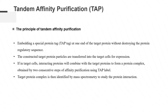Tandem affinity purification, or TAP, is a technology that can quickly study protein interactions in vivo. After two-step specific affinity purification, proteins that have real interaction with the target protein under physiological conditions can be quickly obtained. The TAP method was originally used in yeast. Because of its versatility, high efficiency, high purity, and low false-positive characteristics, it has been rapidly developed. So far, it has been successfully used in the study of interactions with many other organisms.